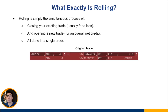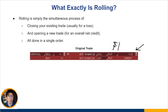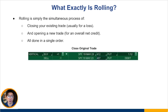Let's say you have already put on a credit spread — in this case, a bull put spread. You can see that it's trading at $1.12. So maybe when you first put it on you sold it for a dollar, and now it moved against you and it's marking at $1.12. So this is where you might want to consider rolling. If you decide to roll, the first thing you do is close out the original trade — buy back this bull put spread for $1.12.